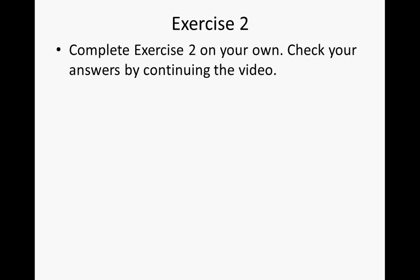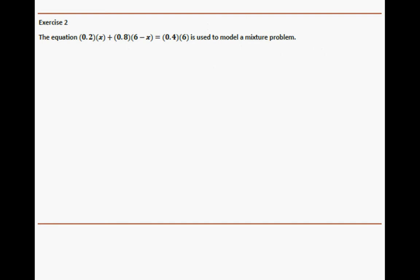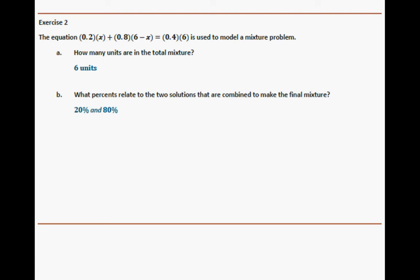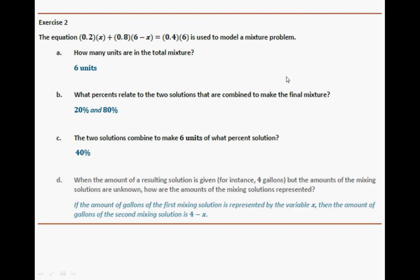Try exercise two on your own and check your answers by continuing the video. The equation 2 tenths X plus 8 tenths times the quantity (6 minus X) equals 4 tenths times 6 tells us: the total mixture is 6 units; the two solutions being combined are 20% and 80%; and they combine to make 6 units at 40%. If the result were 4 gallons instead, we would use 4 minus X instead of 6 minus X.